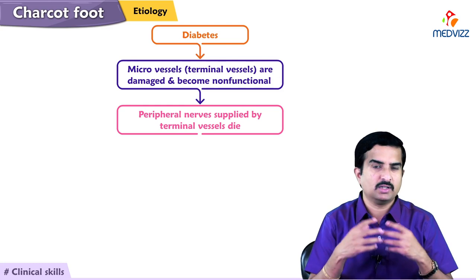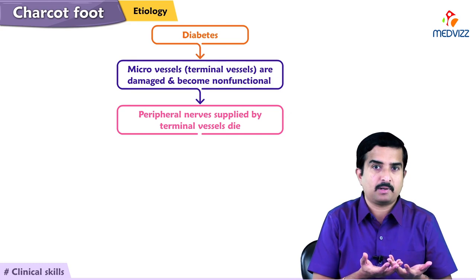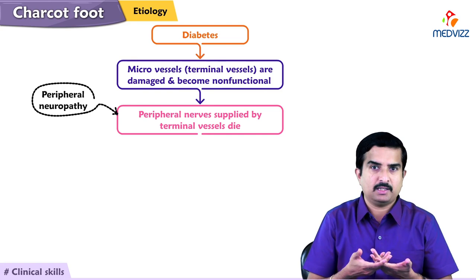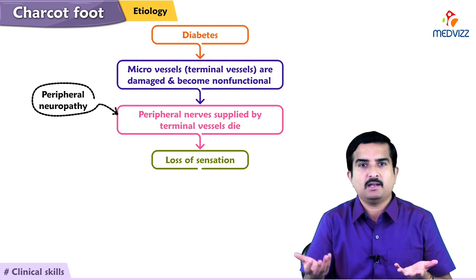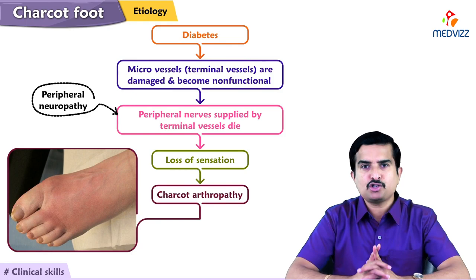When the nerves are not working properly in the periphery we call it peripheral neuropathy. Because of the peripheral neuropathy, the nerves innervating the joints have loss of sensation, which eventually leads to the development of Charcot arthropathy. Therefore, the most commonly associated condition with Charcot neuropathy is diabetes.